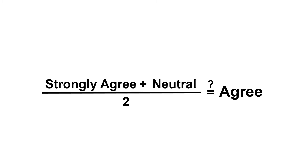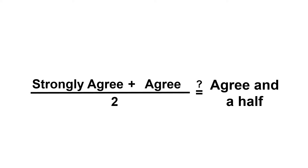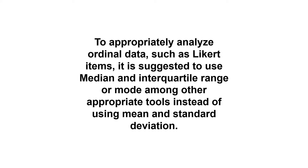Also, it is not clear that the average of 'strongly agree' and 'neutral' is 'agree.' Similarly, the average of 'agree' and 'strongly agree' is not 'agree and a half.' Simply numbering the response levels does not make the responses interval or ratio data. According to ordinalists, to appropriately analyze ordinal data such as Likert items, it is suggested to use median and interquartile range or mode, among other appropriate tools, instead of mean and standard deviation.